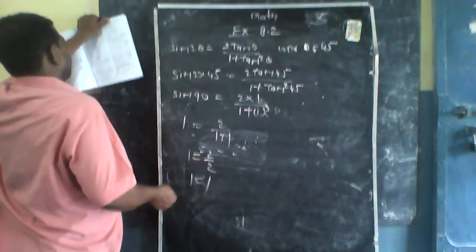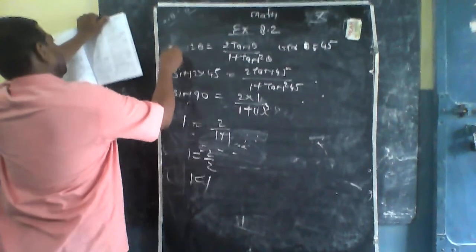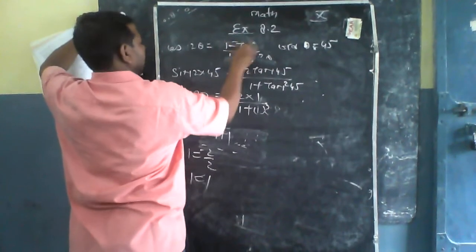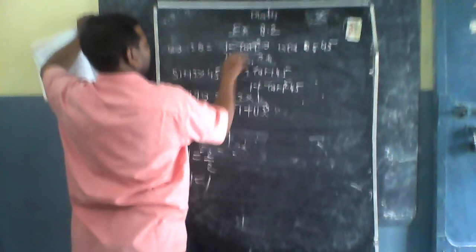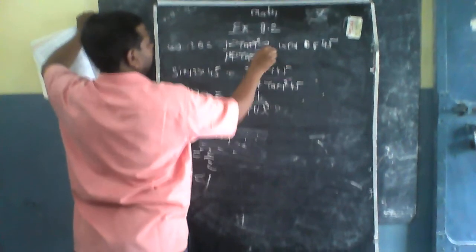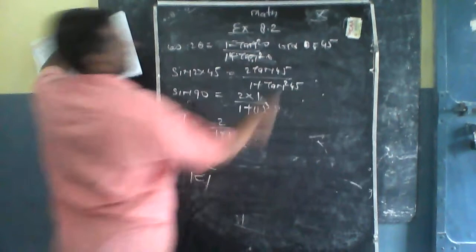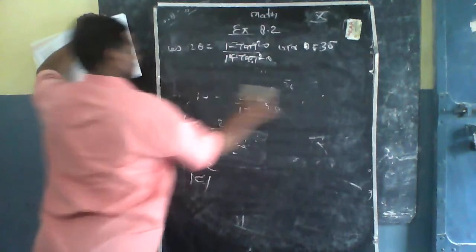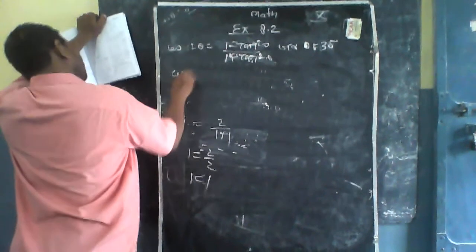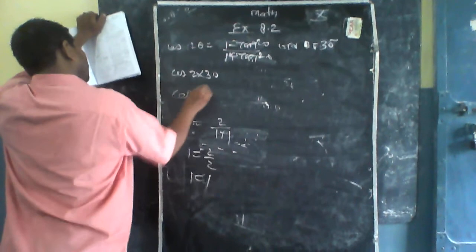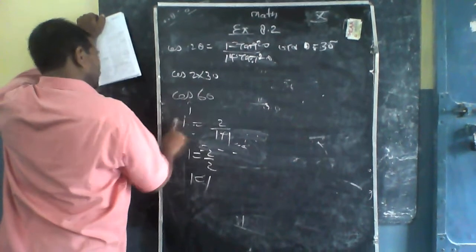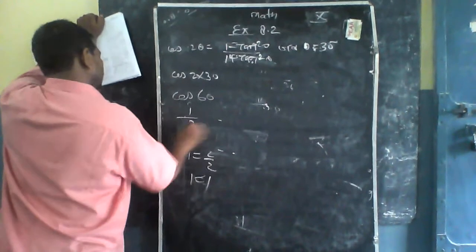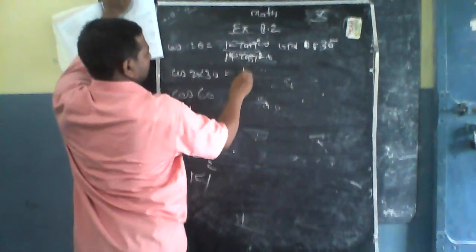Next है आपका — cos2θ = (1 - tan²θ) / (1 + tan²θ) जबकि θ = 30। value लगाएंगे: cos(2×30) = cos60, cos60 का मान 1/2 होता है। आगे देखिएंगे: 1 - tan²30 / (1 + tan²30)।